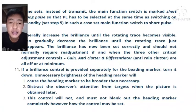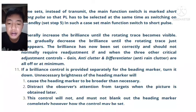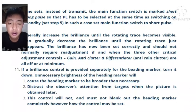In some sets, instead of transmit, the main function switch is marked short pulse or long pulse, so the pulse length has to be selected at the same time as switching on from standby — set the main function switch to short pulse. Number ten, gradually increase the brilliance until the rotating trace becomes visible, then gradually decrease the brilliance until the rotating trace just disappears. The brilliance has now been set correctly and should not normally require further adjustment when the three other critical adjustment controls — gain, anti-clutter, and anti-rain clutter — are all off or at minimum.